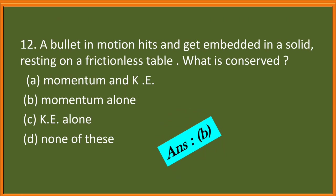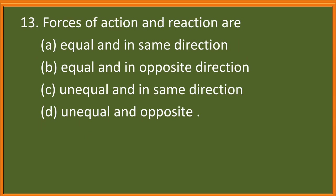Question 12. A bullet in motion hits and gets embedded in a solid resting on a frictionless table. What is conserved? A, momentum and kinetic energy; B, momentum alone; C, kinetic energy alone; D, none of these. Here the correct answer is B, momentum alone.